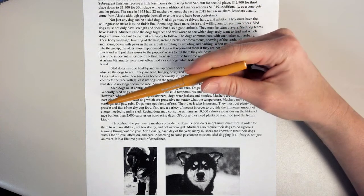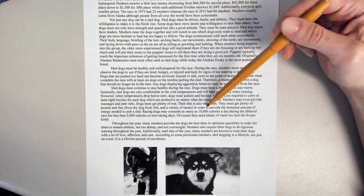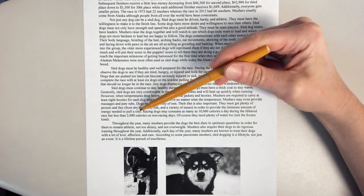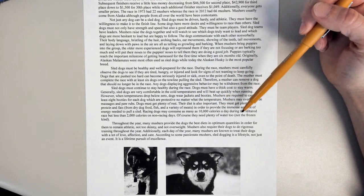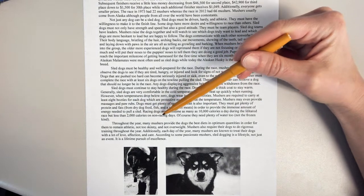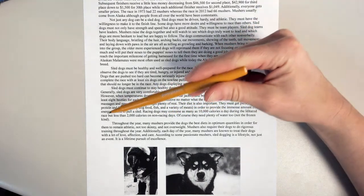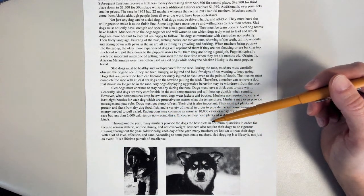They must get plenty of protein and fats from dry dog food, fish, and a variety of meats in order to provide the immense amount of energy needed to pull a sled. Racing dogs may consume as many as 10,000 calories a day during the Iditarod race, but less than 2,000 calories on non-racing days. Of course, they need plenty of water too, not the frozen kind.